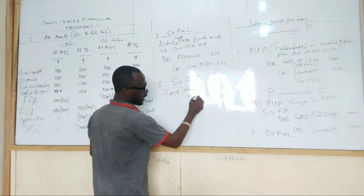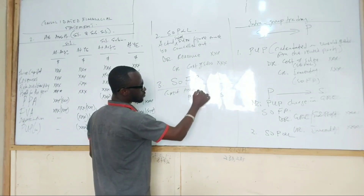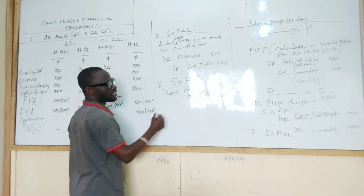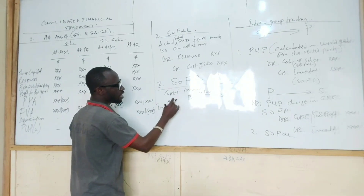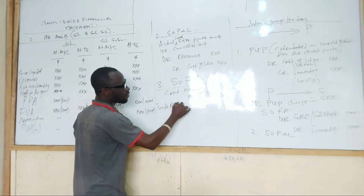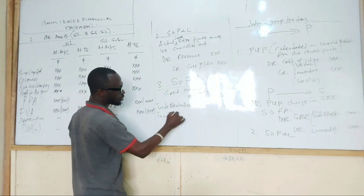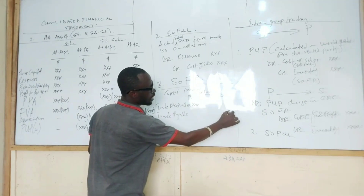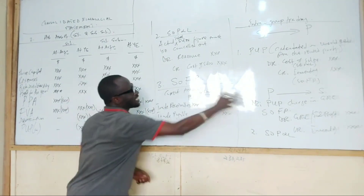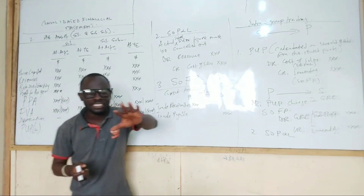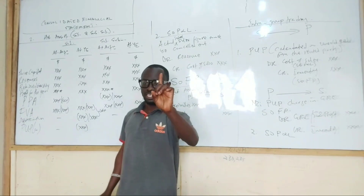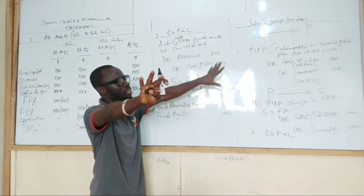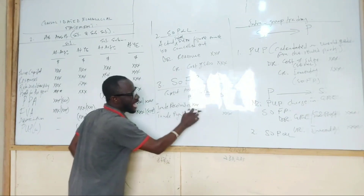Let's say the parent is selling to the subsidiary. If the parent is the one selling, then in the books of the parent they will have trade receivables, and the subsidiary will have trade payables. At the end of the day we must cancel them out. The rule is that nobody should owe somebody in consolidation because we are a single company, so we subtract the effect. But sometimes the accounts will not be the same figure.